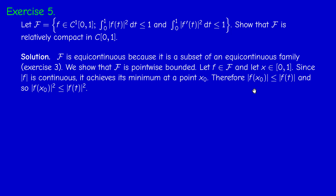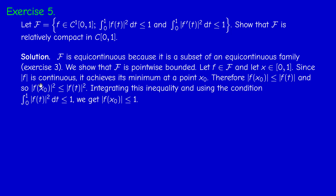By definition, the absolute value of f(x₀) is less or equal than the absolute value of f(t). When I raise to the power 2 and integrate, this is a constant — it doesn't depend on t. So when I integrate, I get that the absolute value of f(x₀) is less or equal than 1. This bound holds uniformly: no matter what x₀ is, we always have |f(x₀)| ≤ 1.